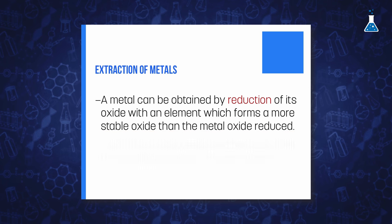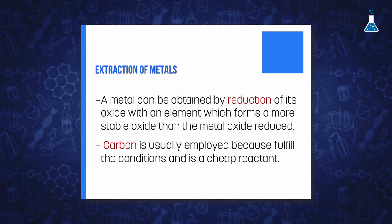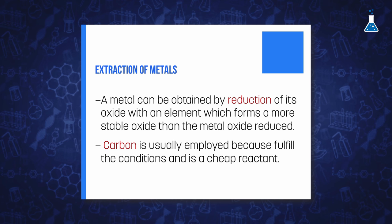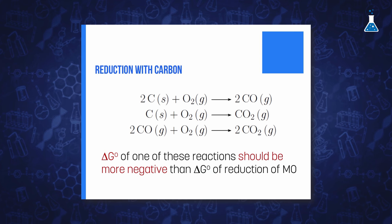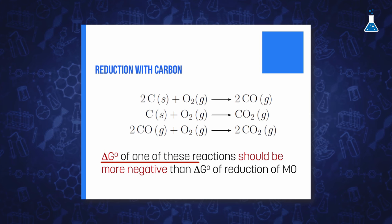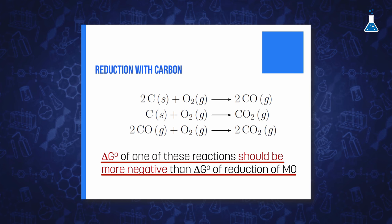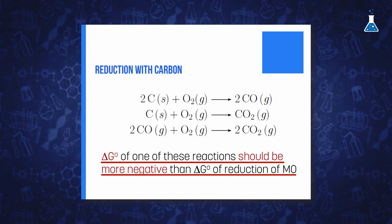That is the case for carbon which not only fulfills these requirements but also is a very cheap reactant. In order to achieve successfully the reduction of a metal oxide with carbon or even with carbon monoxide, one of the following reactions needs to have a more negative Gibbs energy than the corresponding reaction of the formation of the metal oxide.